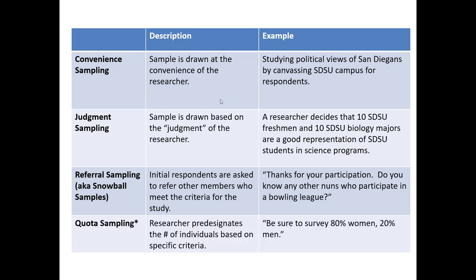Finally, quota sampling is when the researcher pre-designates the number of individuals to study based on some specific criteria. For example, the researcher may say, 'Be sure to survey 80% women and 20% men.' Quota sampling, if the basis for those criteria is arbitrary, would be a non-probabilistic method. On the other hand, quota sampling can be a probabilistic method if those quotas are based on careful considerations of a known demographic composition.